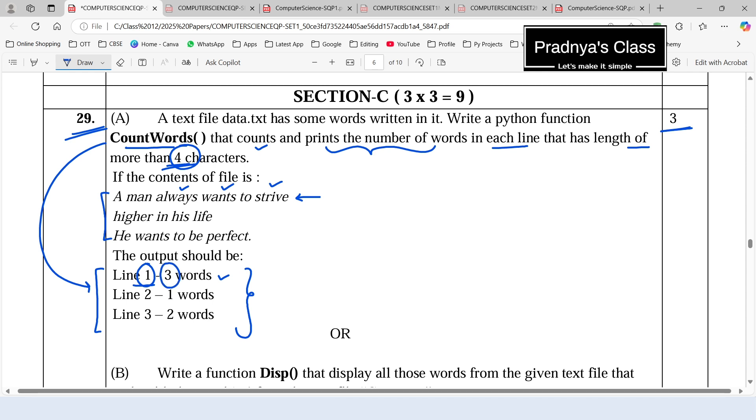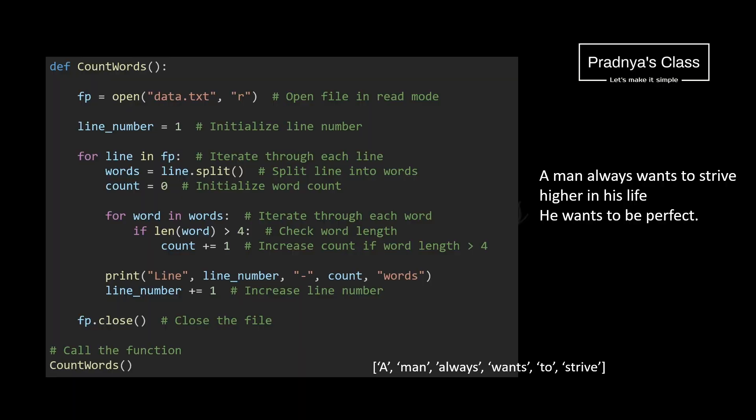If you know how to write the program you can pause the video. If not, let's do it together. According to the instruction here is the function name. The first step is always to open the file. We are reading the content of the file, that's why the file will get opened in the R mode. In the previous video we discussed how to read data from the file — there are three functions: read, readline, and readlines. Using the file pointer we can read the content of the file line by line, which is what we are doing here.